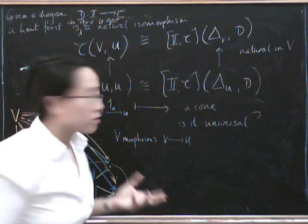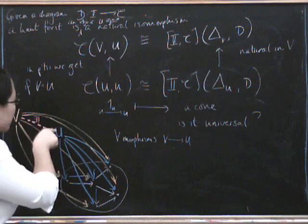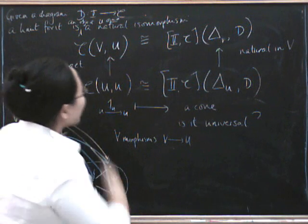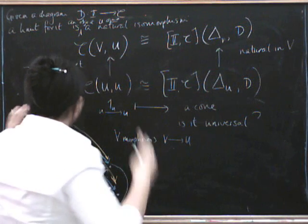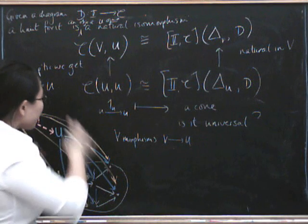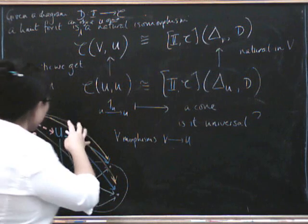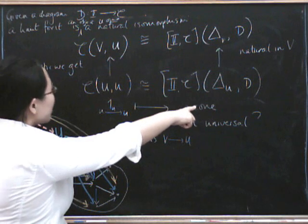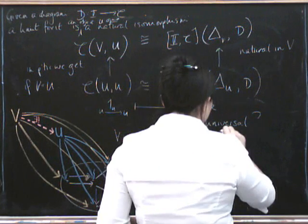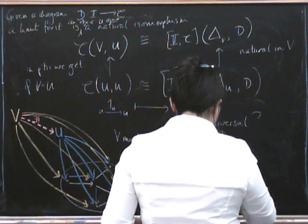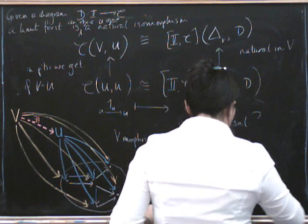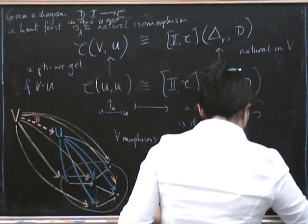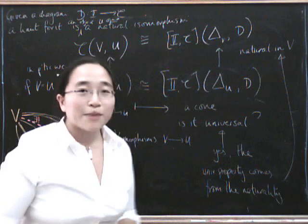So what this is saying is, well, it's sort of the other way around from how we did it before, because what we did before was that we started with a cone at V and we produced the factorization and it was a unique one. What I've sort of done here is I've started with the factorization and I've produced the cone. And because this is a natural isomorphism, what it's saying is that there's a one-to-one correspondence between the factorizations and the cones, and moreover, the naturality is telling us that that correspondence has to be by composition in this way. So what that's telling us is that this cone that we identified here really is universal and the universal property corresponds to—yes, the universal property comes from the naturality. Which naturality? That naturality. I might explain that more next time.